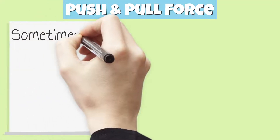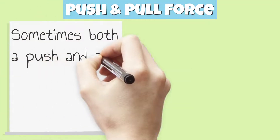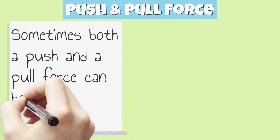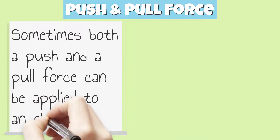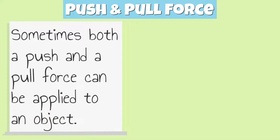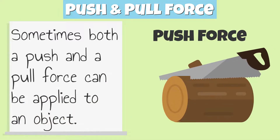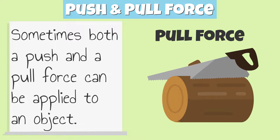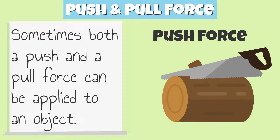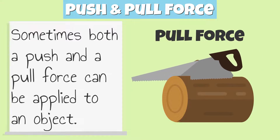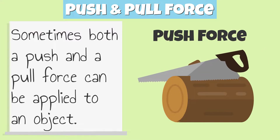Sometimes, both a push and a pull force can be applied to an object. For example, when a saw is used to cut wood, both a push and a pull force is applied to the saw.